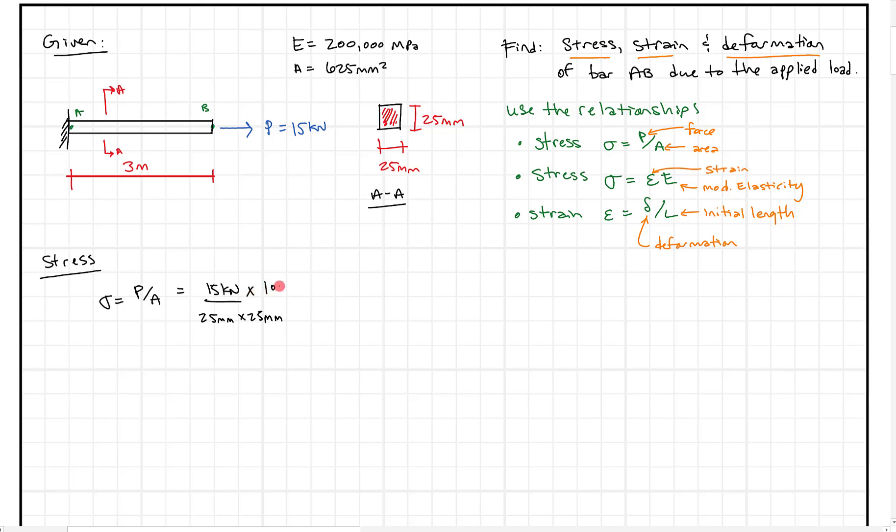So what we want to do is we want to get that into units that we like. And to do that, I'm going to multiply the top by 1000 newtons per kilonewton, and that gives me essentially when we end up here, we're going to end up with canceling out these kilonewtons. We're going to end up with newtons per millimeter squared. And what that gives us is it gives us 24 newtons per millimeter squared.